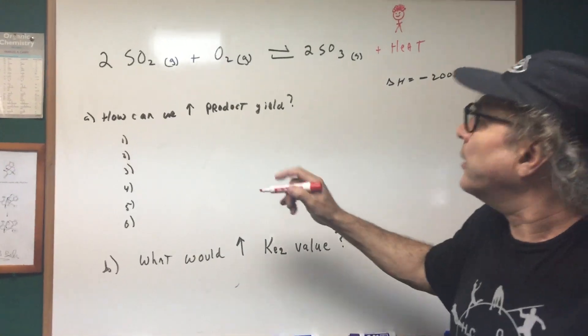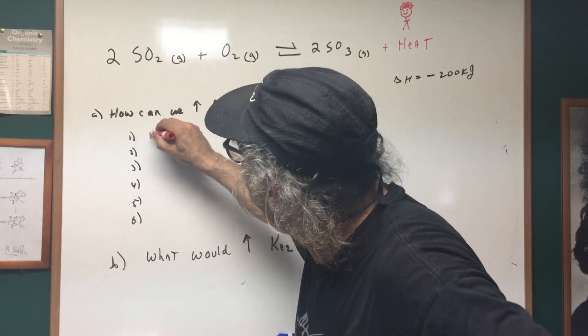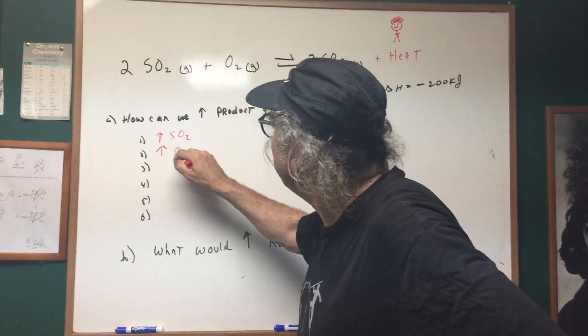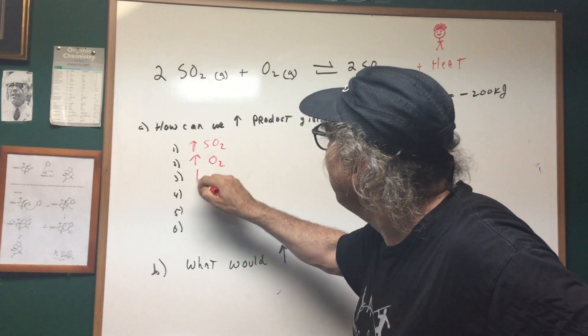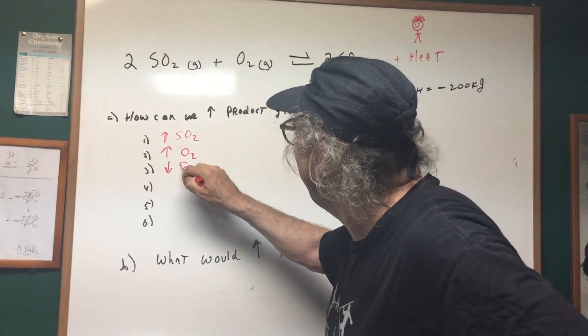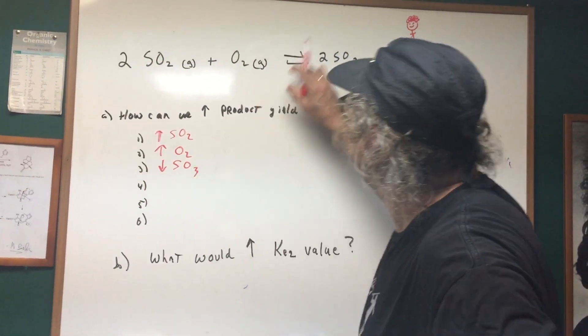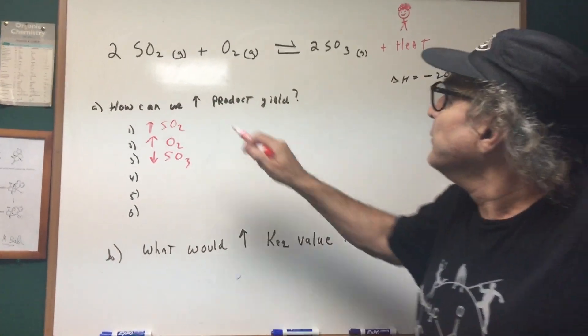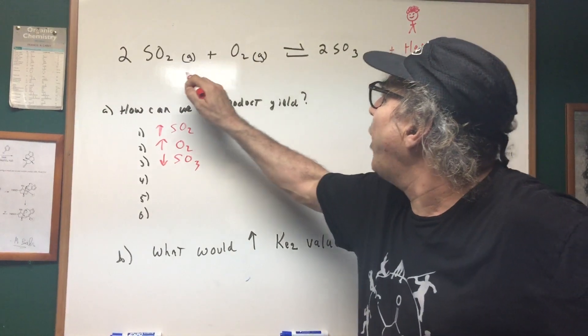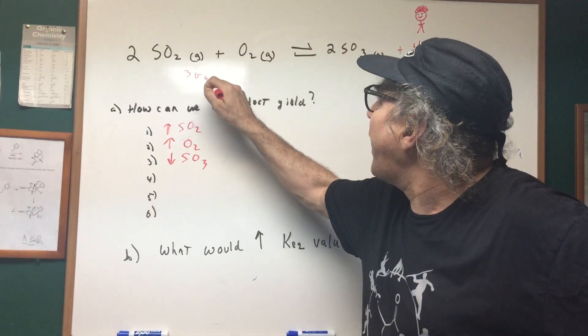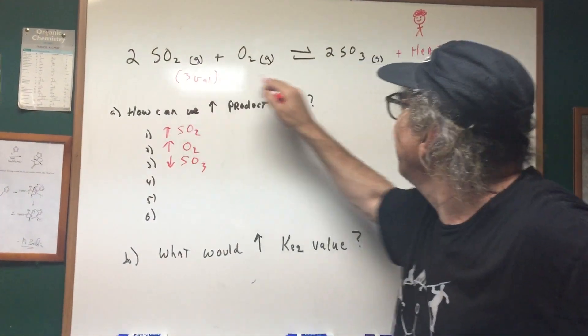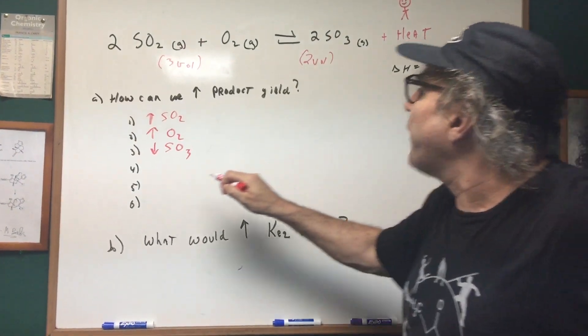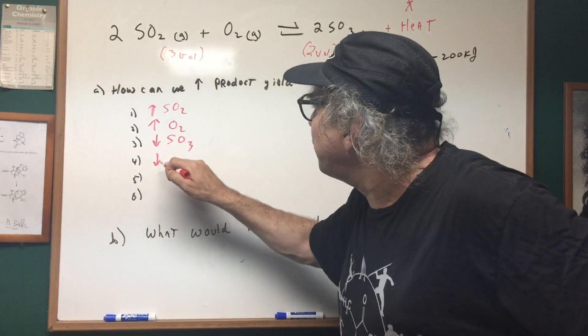How can we maximize product? One, we can use Le Chatelier's principle. I can increase SO2, I can increase oxygen, or I can decrease the SO3. If I decrease the SO3, more would come over to replenish it. Next we have two volumes and one that gives me three volumes of gas on the left and two volumes of gas on the right. So I want to go to lower volume.